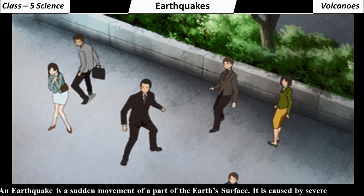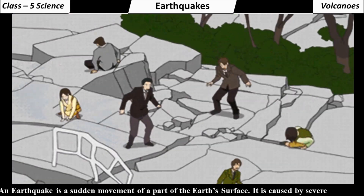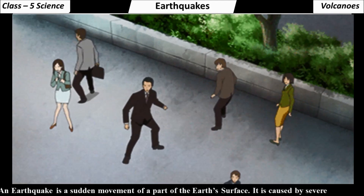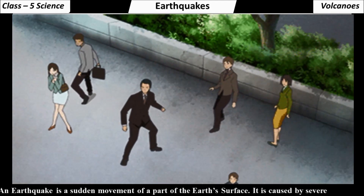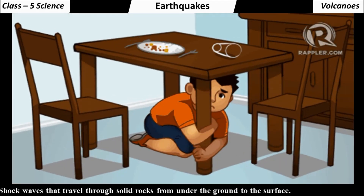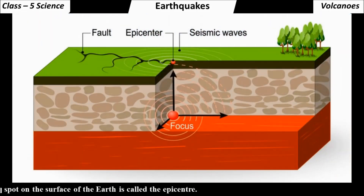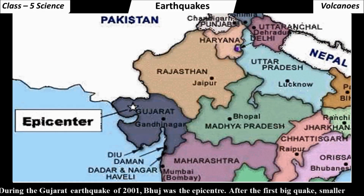An earthquake, also known as a quake or a tremor, is a sudden movement of a part of the earth's surface. It is caused by severe shock waves that travel through solid rocks from under the ground to the surface. The point under the ground where the earthquake begins is called the focus, and the corresponding spot on the surface of the earth is called the epicenter. During the Gujarat earthquake of 2001, Bhuj was the epicenter.